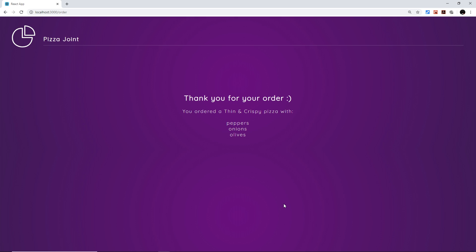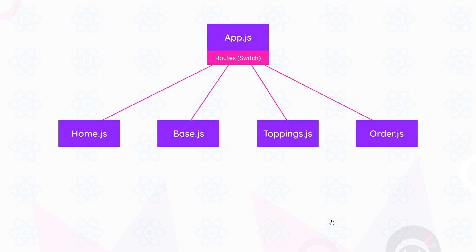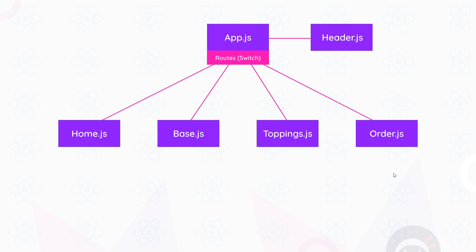Before looking at the code, here's what the component tree looks like. At the top we have the root level component App.js, and nested inside is a Switch component with all routes — only one component shows at a time. The flow goes: Home → Base (at /base) → Toppings (at /toppings) → Order (at /order). There's also a Header component inside App.js that shows on every page.